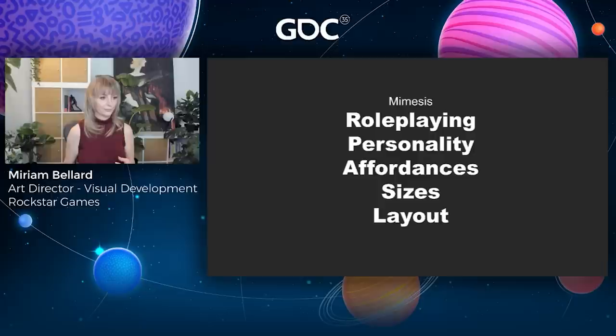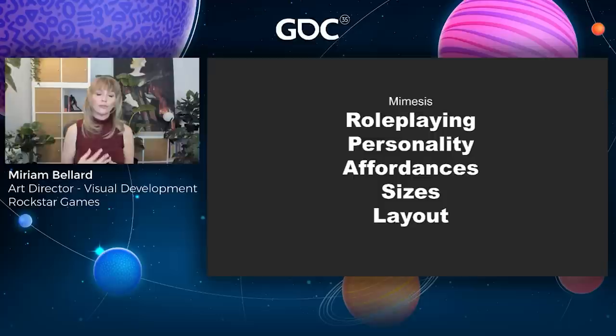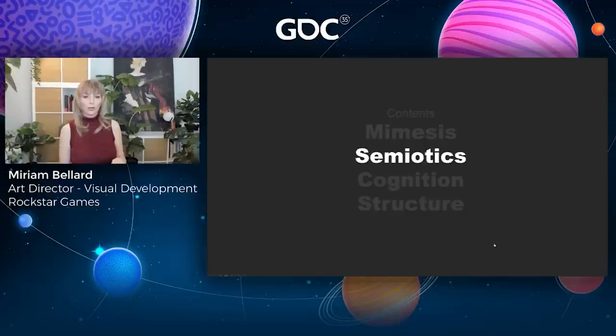To sum up the mimesis section — all about mimicking and copying reality: role-playing is about thinking through different characters and layers of history; personality covers behavioral traces, identity claims, and mood modifiers; affordances are the actions an object allows and real-world affordances affect in-game storytelling; sizes affect how we see materials, structure, and characters; and it's just as important to research your layout as any other aspect of a design. Next, we're going to talk about semiotics — signs and symbols and how we communicate.